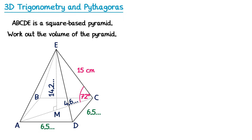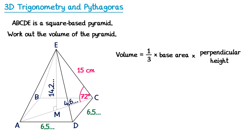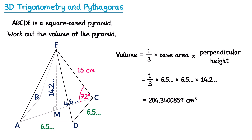We're now ready to find the volume. Volume = ⅓ × base area × perpendicular height. The base area is 6.5... × 6.5..., and the perpendicular height is ME = 14.2 and so on. It cannot be stressed enough: do not use rounded numbers here — you need to use the full unrounded values from your calculator. Doing this properly gives the answer 204.3 cm³ to one decimal place.